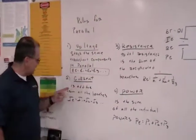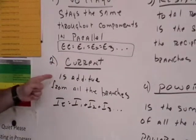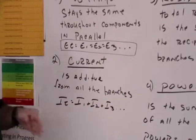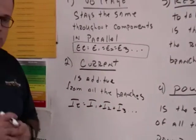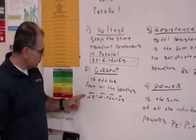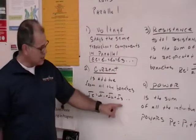Now, the second rule is the rule for current. The rule for current is that it is additive from all of the branches. Meaning, once you solve for current in the branches, you just add them up. And here's the equation that we use. The total current is equal to I1 plus I2 plus I3.